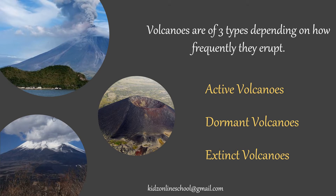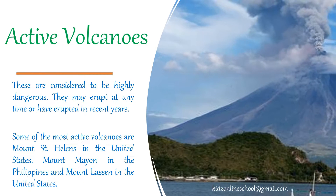Volcanoes are of three types depending on how frequently they erupt: active volcanoes, dormant volcanoes and extinct volcanoes. Active volcanoes are considered to be highly dangerous. They may erupt at any time or have erupted in recent years. Some of the most active volcanoes are Mount St. Helens in the United States, Mount Mayon in the Philippines and Mount Rainier in the United States.